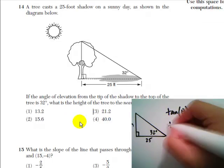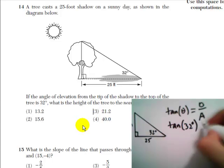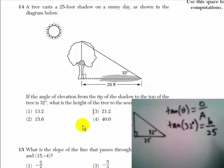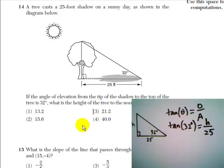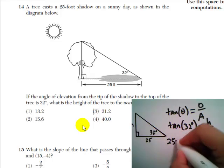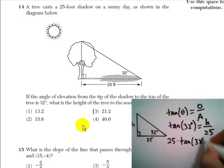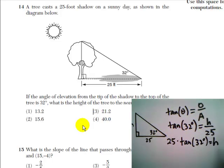So we have tangent of 32 degrees equals the height of the tree divided by 25. Doing a little bit of algebraic manipulation before we go to the calculator, I see that 25 times the tangent of 32 degrees equals the height of the tree.